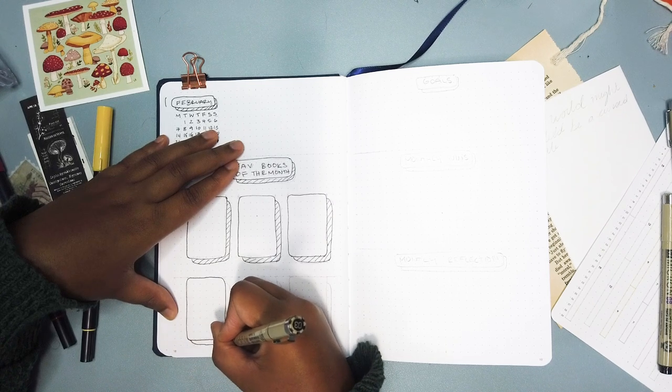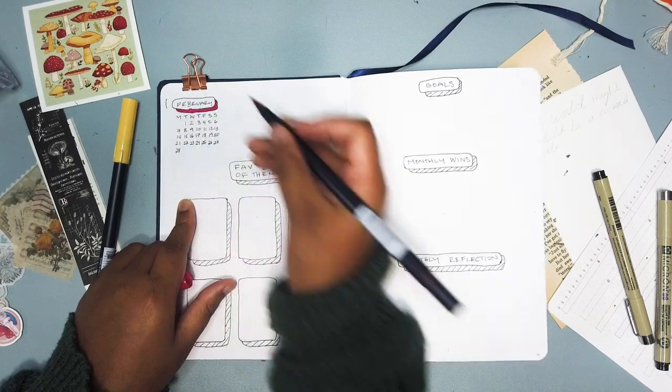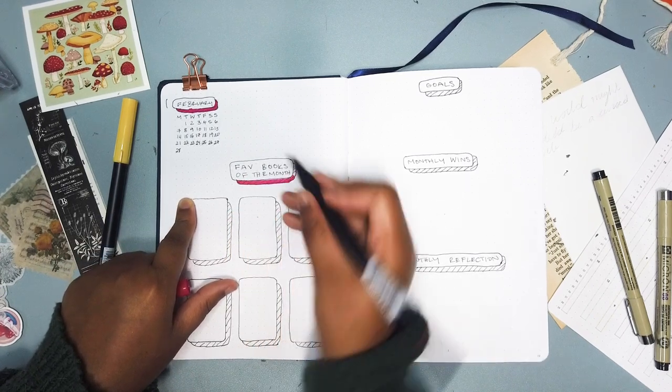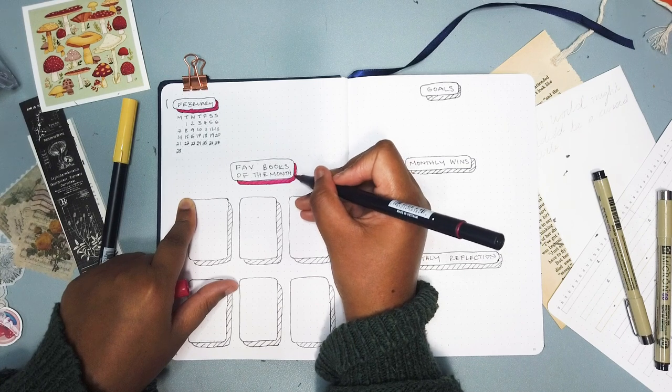And so I'm just kind of figuring out what might work for me and trying out different things. And so in this case I'm just doing a little monthly spread here. I didn't want to do a title page or anything that intense.